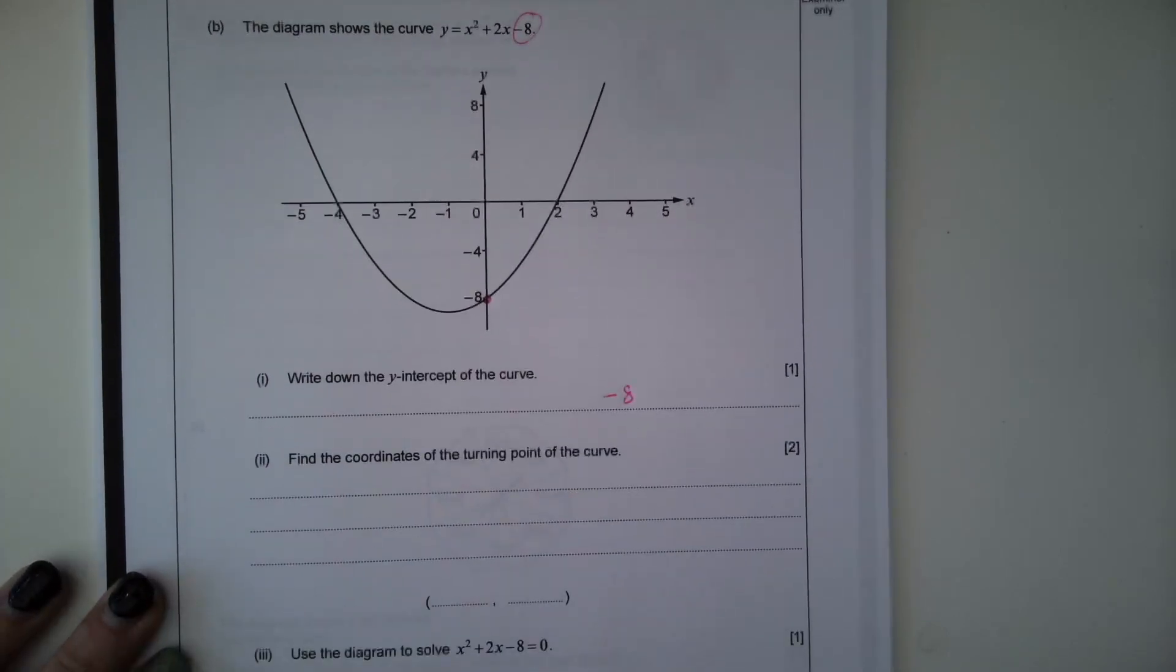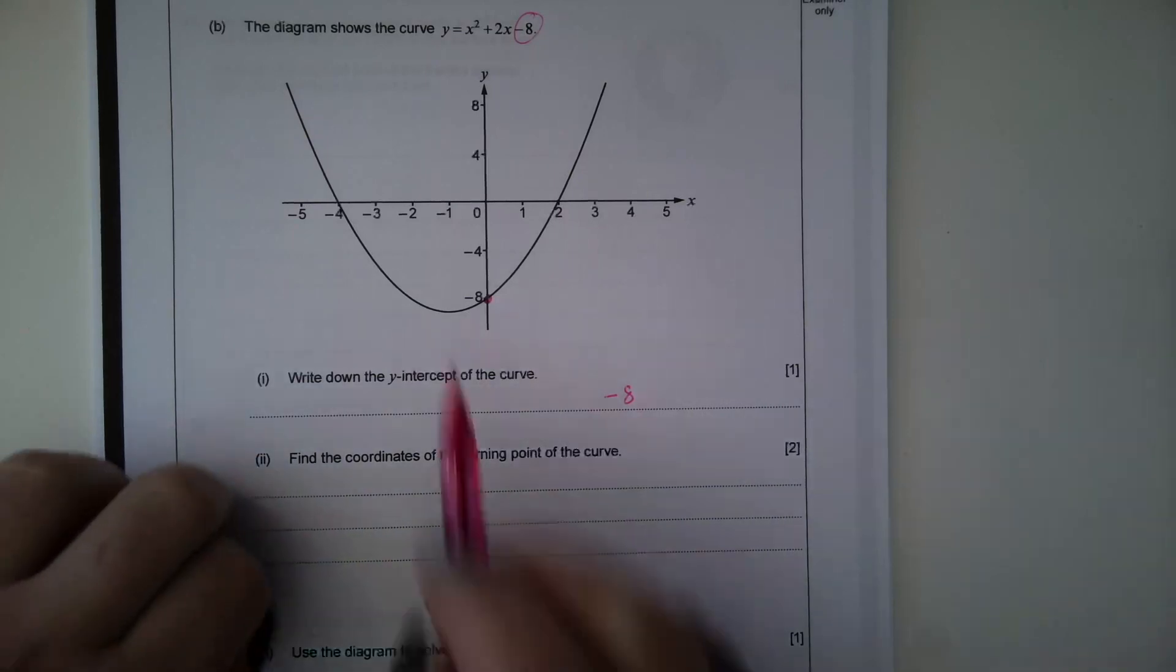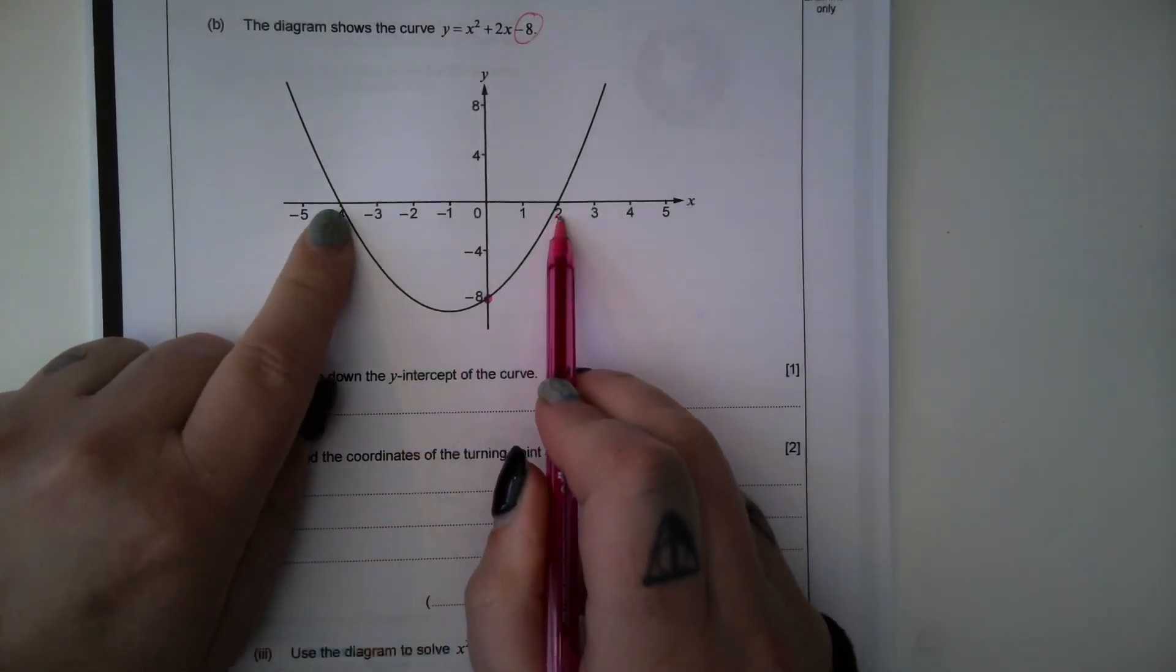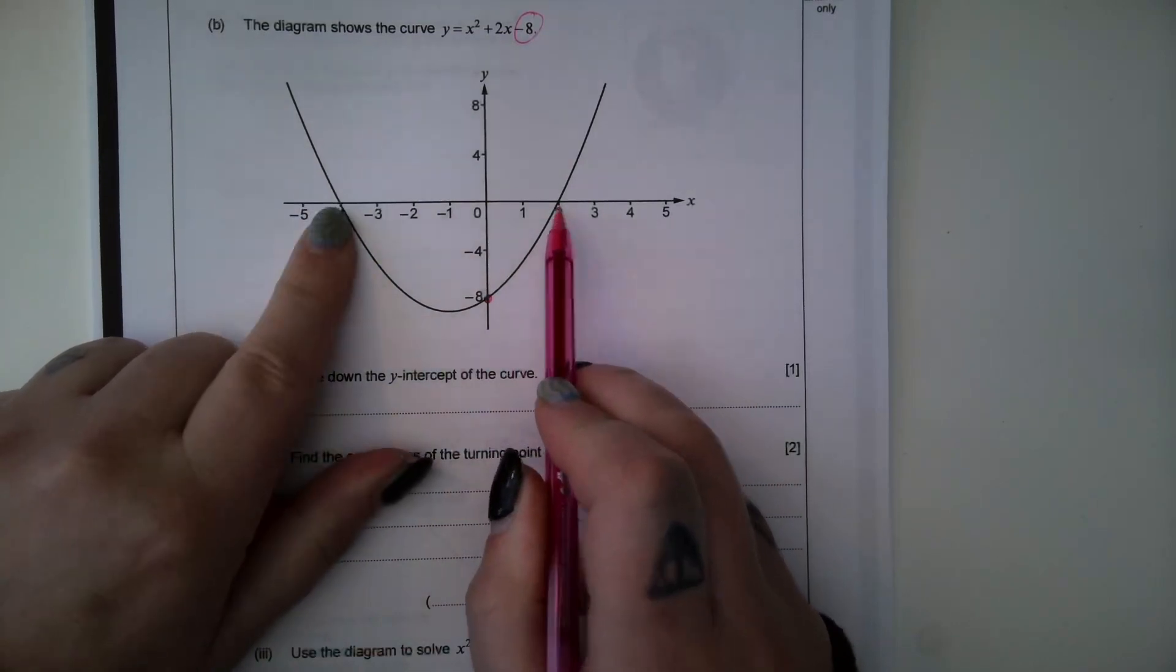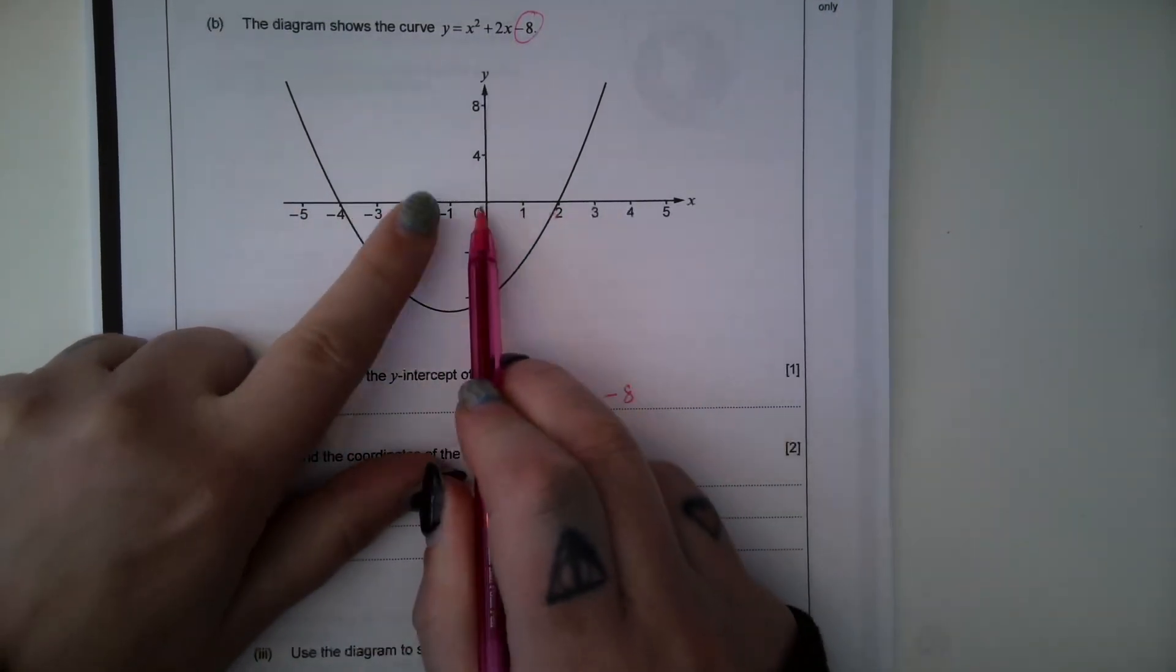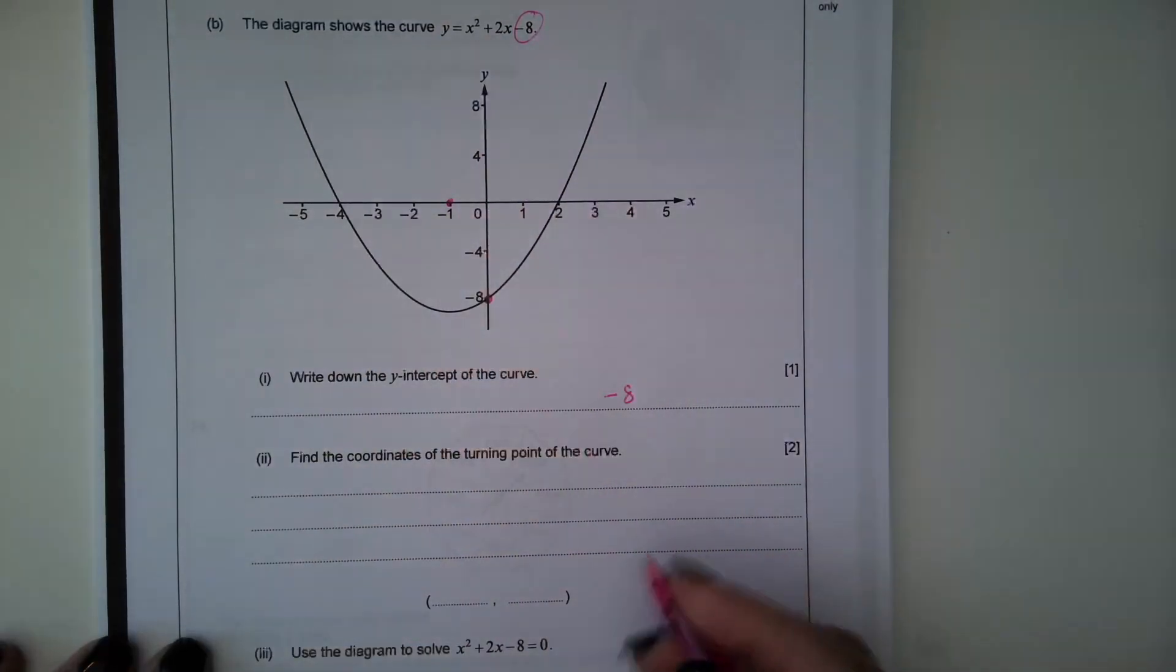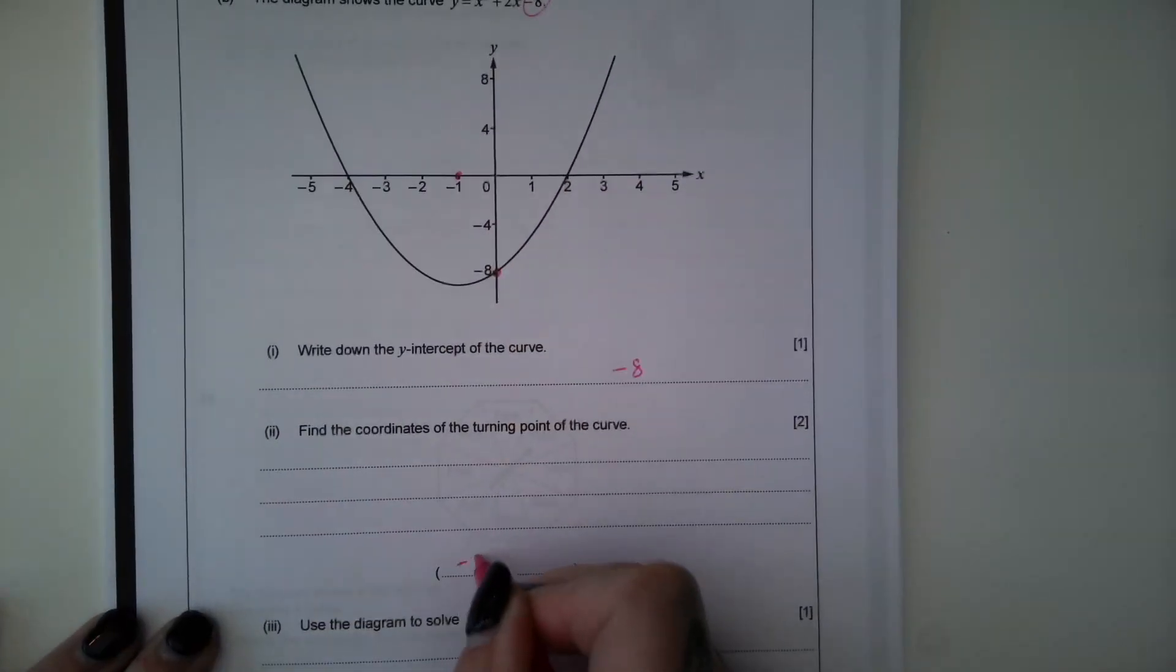Find the coordinates of the turning point of the curve. So the turning point is the point of symmetry. So we can identify the point of symmetry, the X coordinate, because it'd be halfway between the two roots. So halfway between minus 4 and 2. So 1, 2. So halfway between minus 4 and 2 is minus 1.